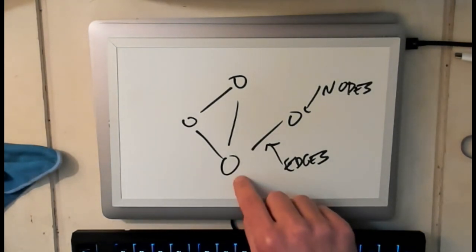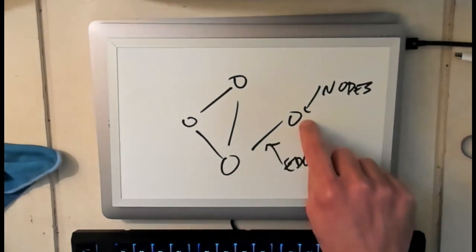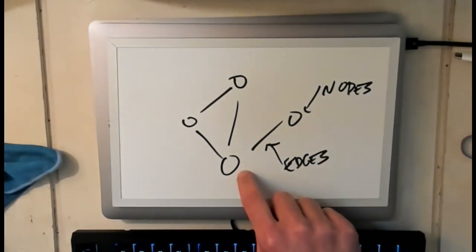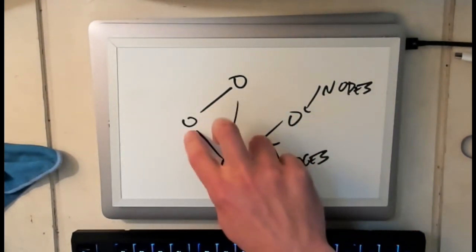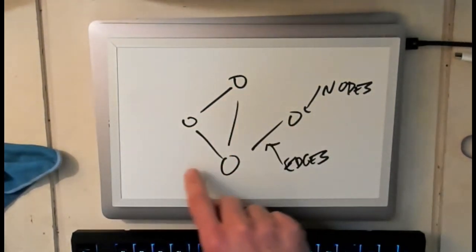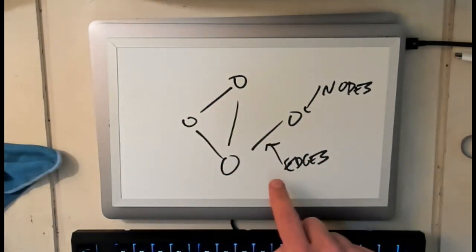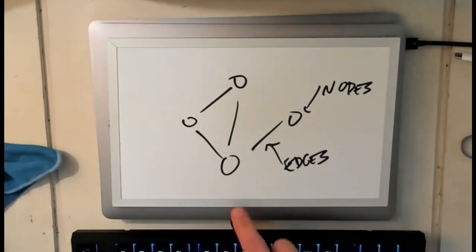What we talked about here are the neighbors of a given node. So this node over here has one neighbor. This node has one, two, three neighbors. This node has two neighbors and this node also has two neighbors. So the number of neighbors is the number of nodes that a node is connected to.